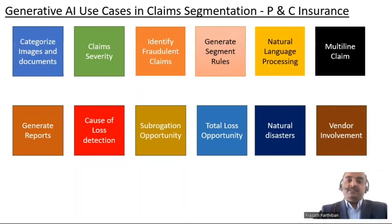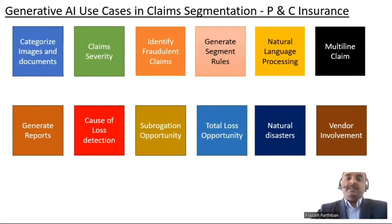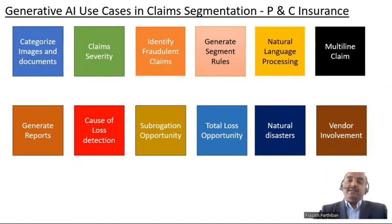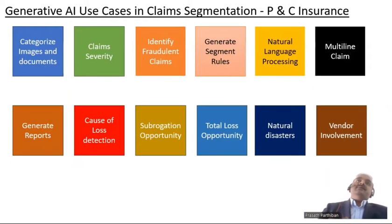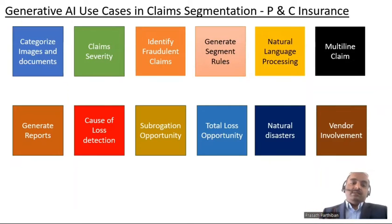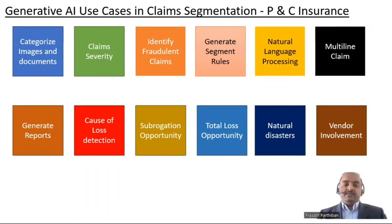In the claims segmentation process, let's look at use cases one by one. First use case is categorizing images and documents. When you create a claim, the insured can provide any number of documents along with pictures. It's very important to segment that data based on category so it can be processed without difficulty. For example, for a personal auto loss you may have images showing high damage versus images showing non-critical damage. You have to categorize those images and documentation so that processing can be streamlined.